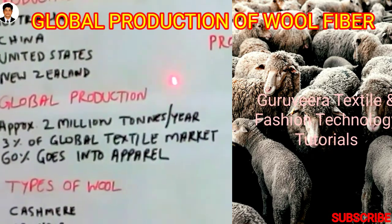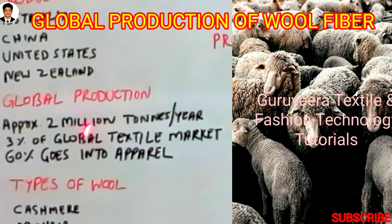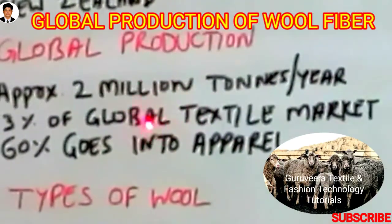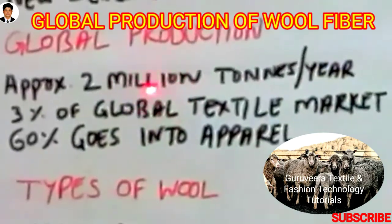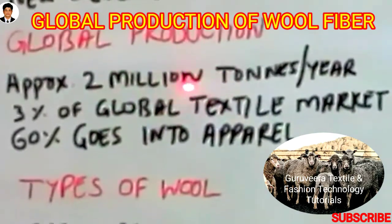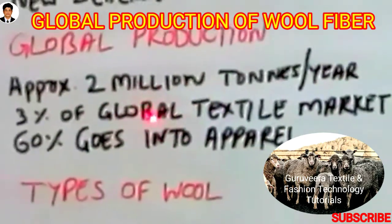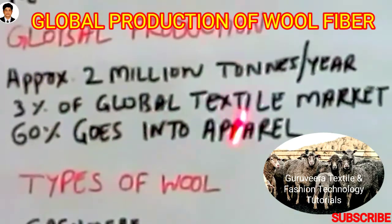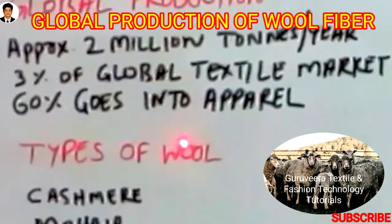So: 2 million tons per year total production, 3% among the textile market, and 60% of total wool production used for apparel. Now, India has only a small share — it is also producing wool, but its contribution is very less. What I am talking about is total global production.